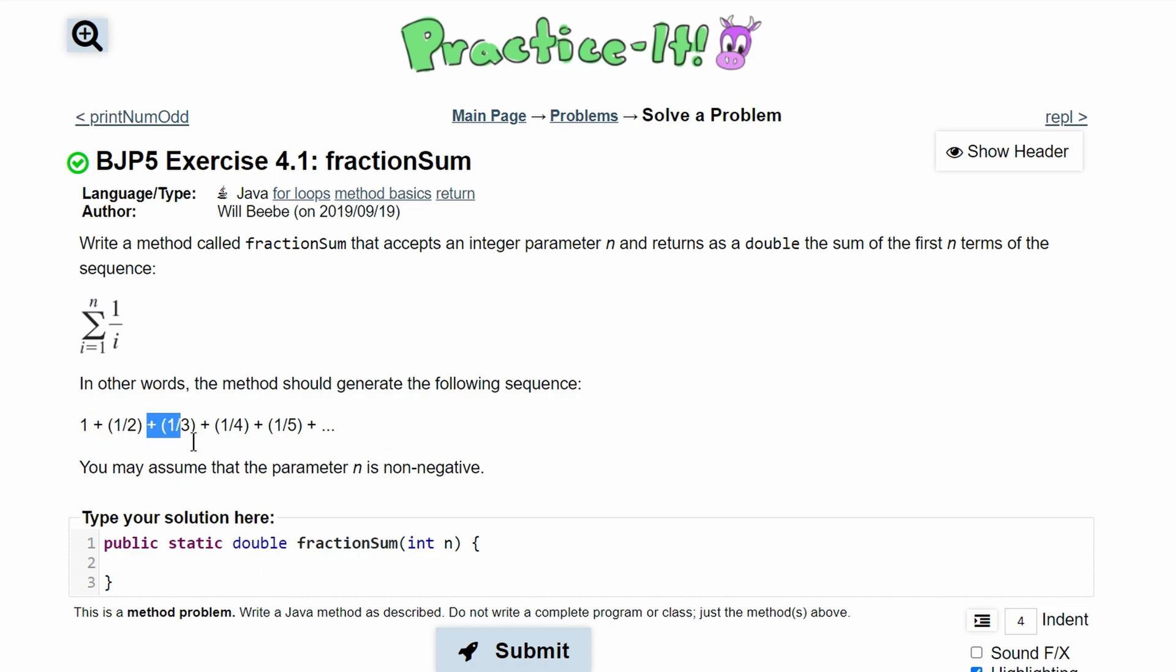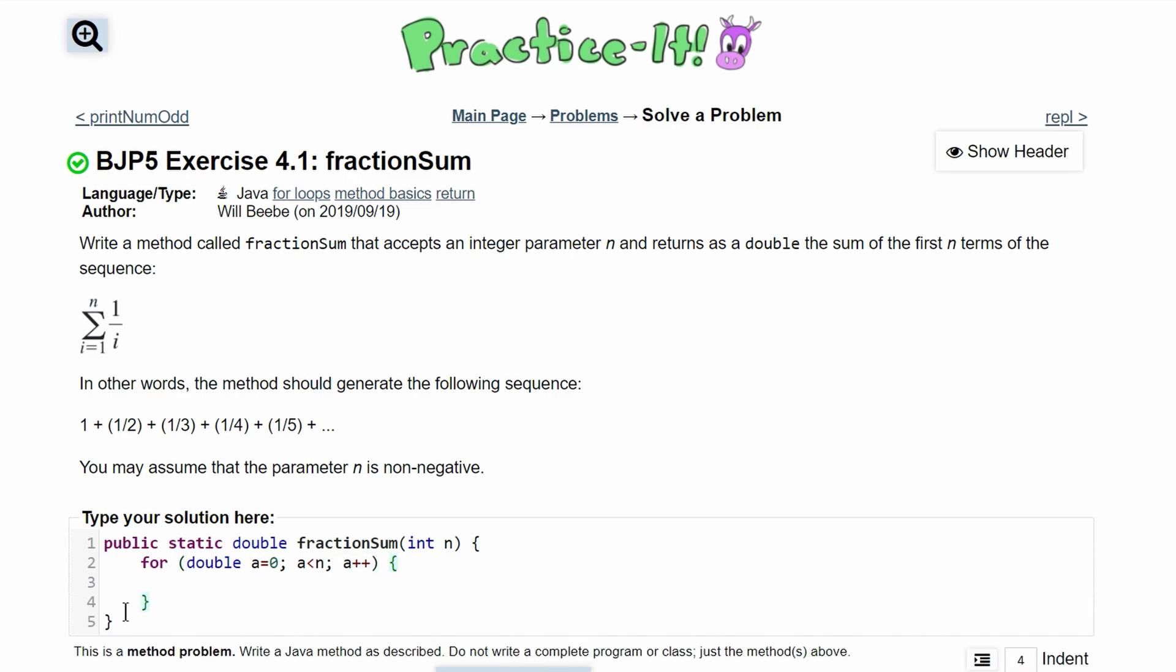Since we need to do this n number of times, we can use a for loop. We'll do for, and since we're dealing with doubles, instead of int a equals 0, we're going to have double a equals 0. Then we run it as long as a is less than n, and we do a plus plus so we can eventually break out of our loop. We have our brackets to close off our for loop, and now we can write inside it.